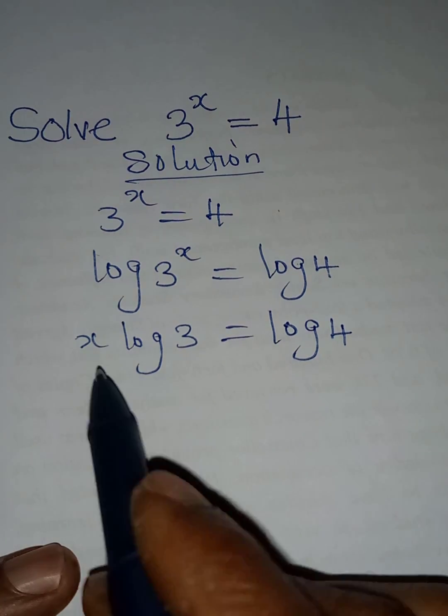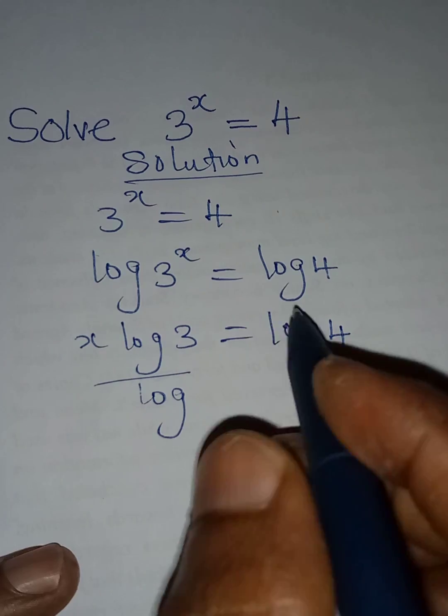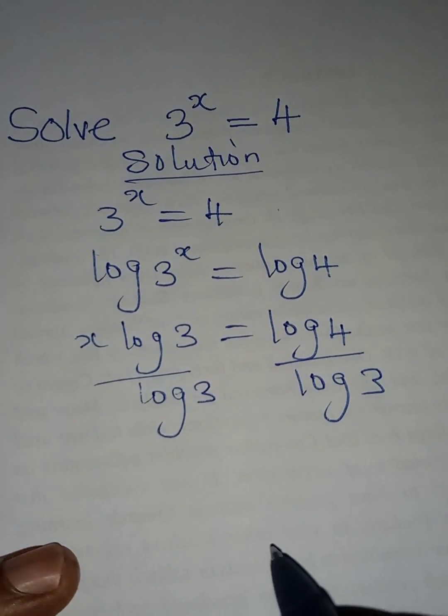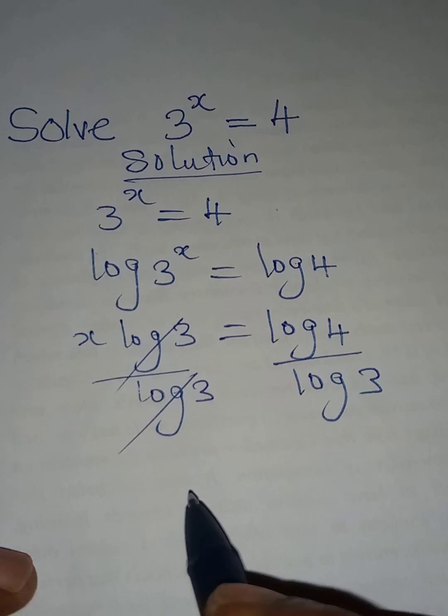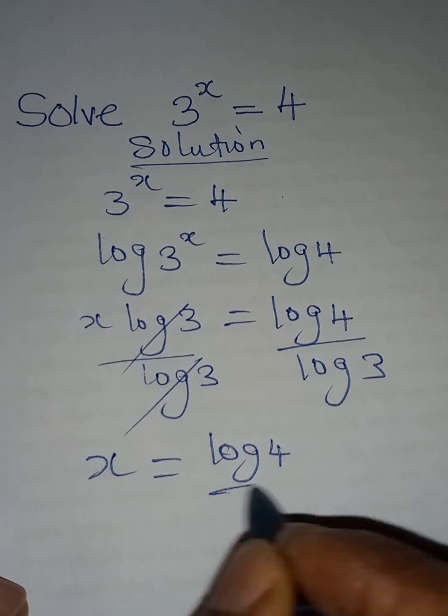Now to get x as the subject, we will divide both sides by log 3. Log 3 will cancel log 3, then x will be equal to log 4 over log 3.